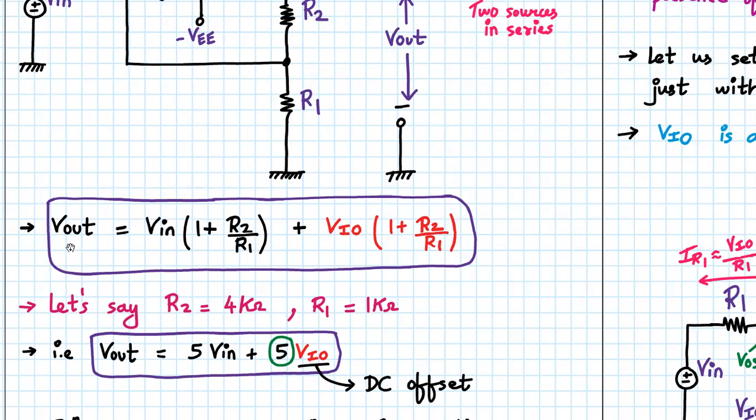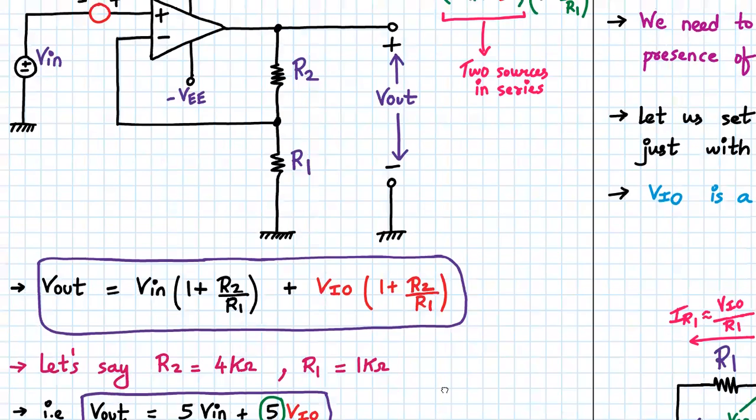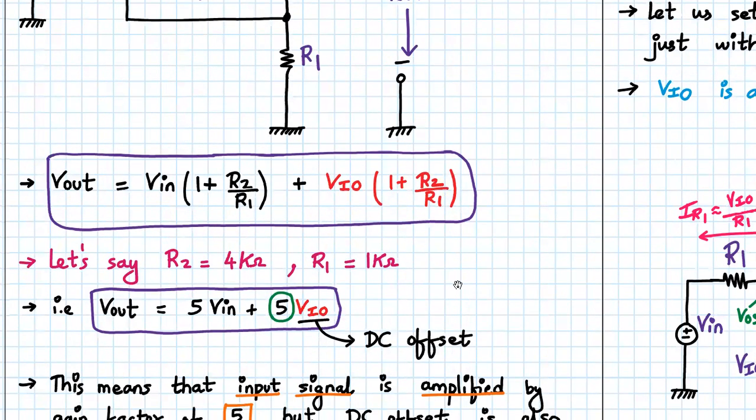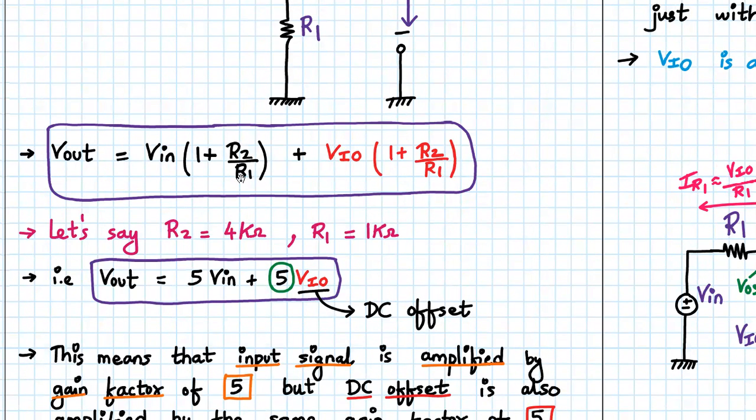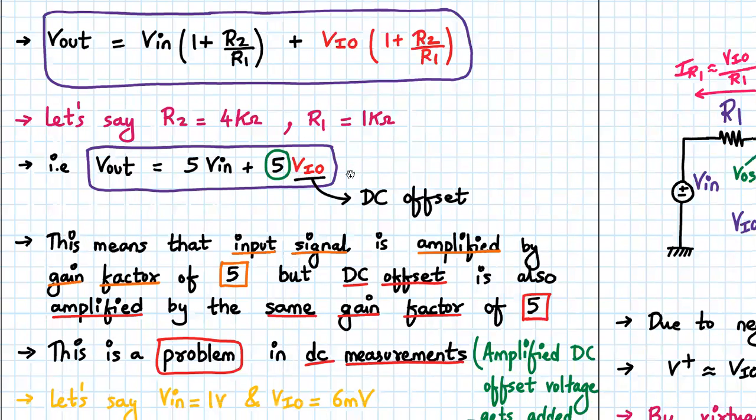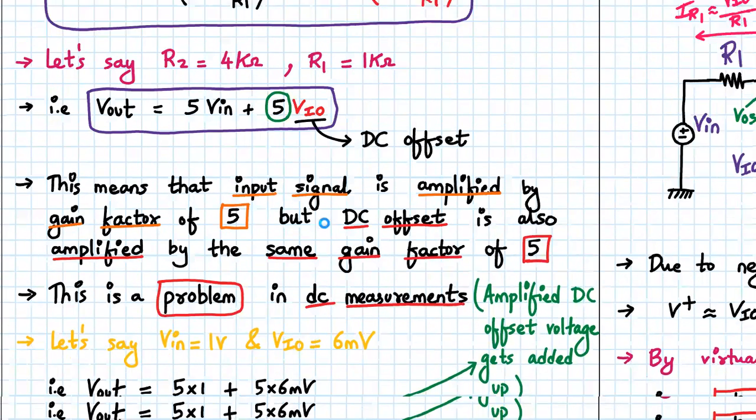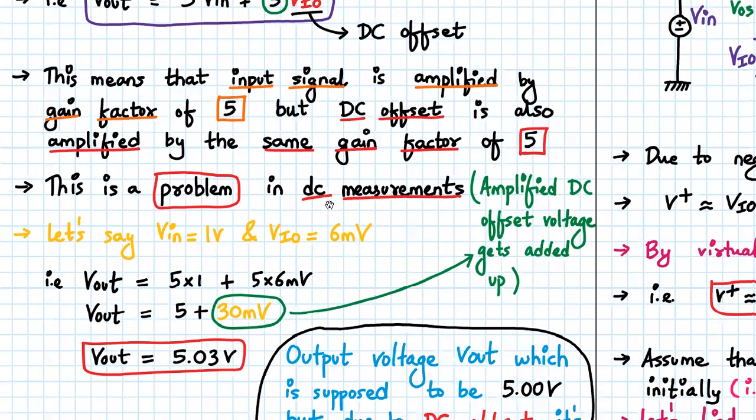We can split the output expression as Vout = Vin(1 + R2/R1) plus this additional term due to input offset voltage, which is VIO(1 + R2/R1). Let's say in our analysis, R2 = 4kΩ and R1 = 1kΩ, so Vout = 5Vin + 5VIO. This means the input signal is amplified by a gain factor of 5, but DC offset is also amplified by the same gain factor of 5. This is a problem in DC measurements, especially in cases where even millivolt signal errors are not tolerated.